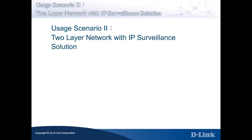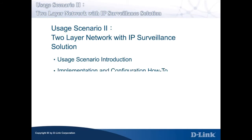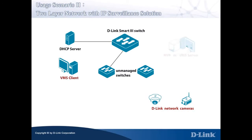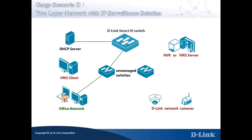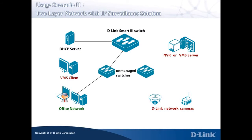Usage Scenario 2 is a Two-Layer Network with IP Surveillance Solution. In the following slides, we will introduce the second usage scenario and talk about how to implement and configure Usage Scenario 2 Auto Surveillance Network. This is a two-layer switched network with the Smart 3 switch as the core layer switch and two unmanaged switches as the access layer switches, as shown in the diagram.